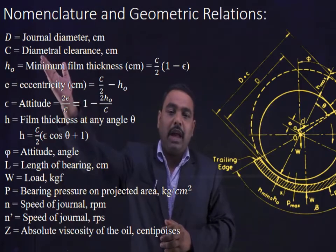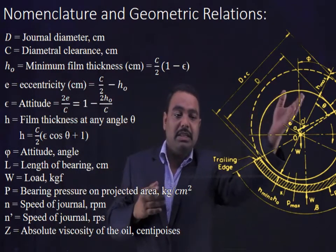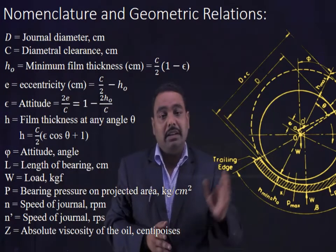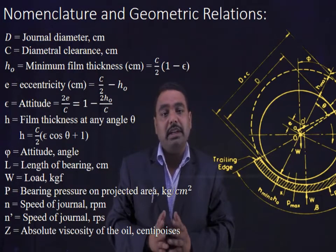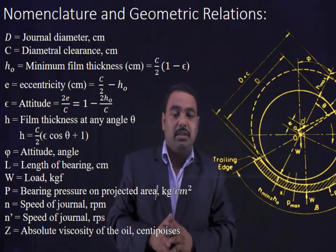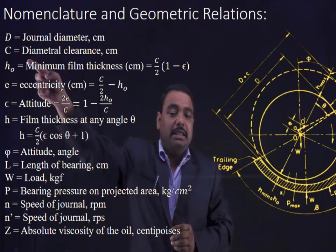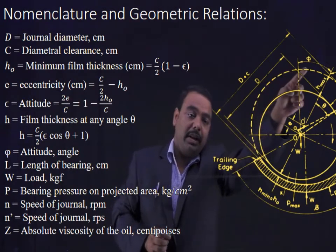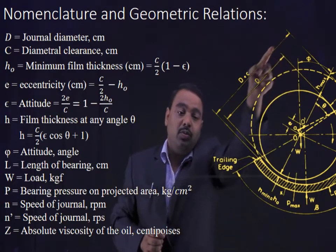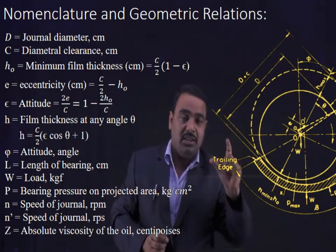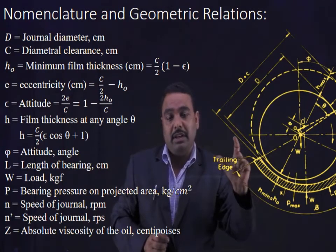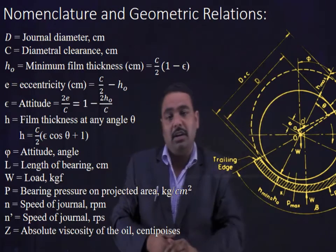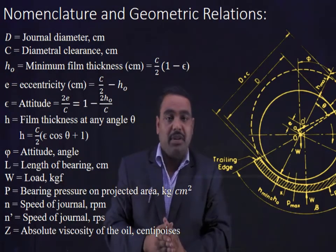First is capital D — the journal diameter, which we take in centimeters. Next is C, the diametral clearance. You can see in the diagram that the hub diameter is D plus C, so you can calculate the diametral clearance C by subtracting the journal diameter D from that distance. Next is H naught — the minimum film thickness in centimeters, which is where the gap between the bearing and the journal is minimum.